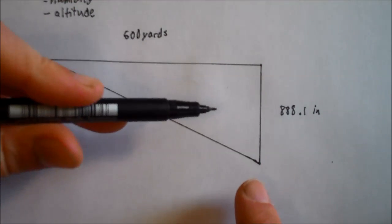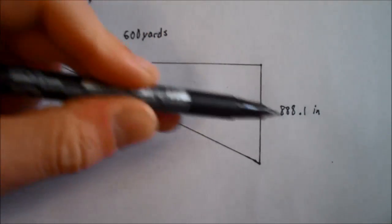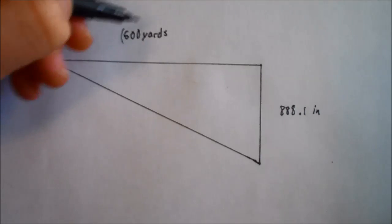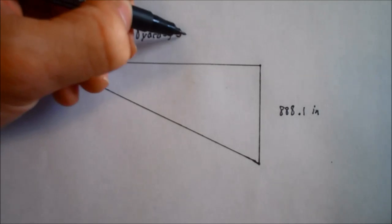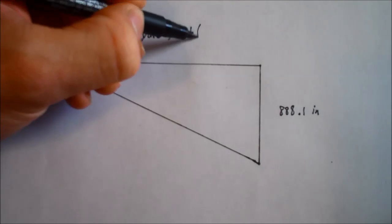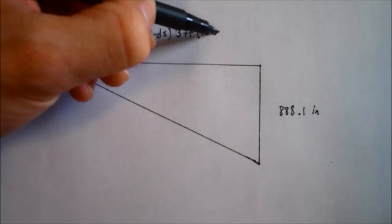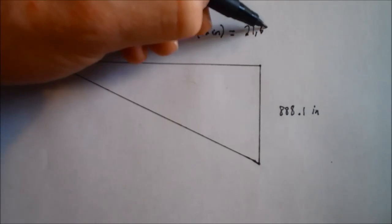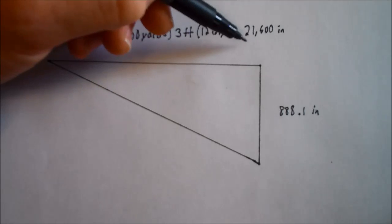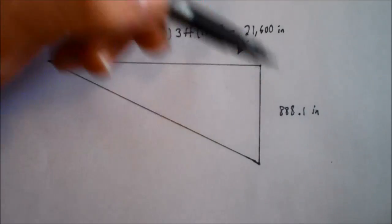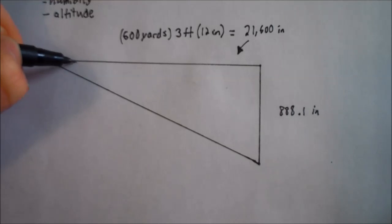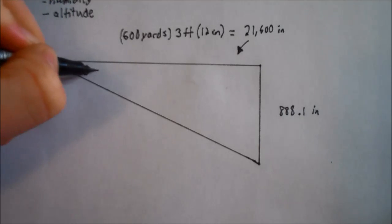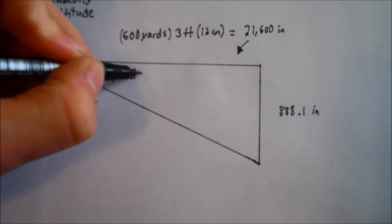But you're going to have to make your units match. So you're going to have to either convert all to inches or convert all to yards. So let's just use all inches. So 600 yards, we're going to multiply that times 3 for 3 feet in a yard, and then multiply that by 12 for 12 inches in a foot. And then that's going to equal a total of 21,600 inches on top here. And 888.1 on this side. And then this angle here is the important angle. We're going to call that theta. And that's going to be our angle of drop.